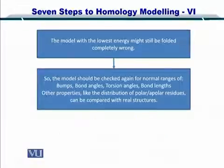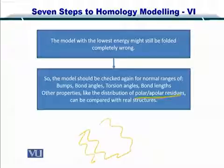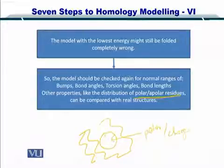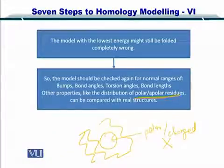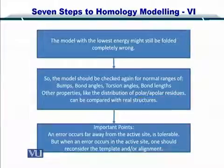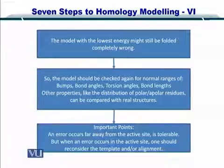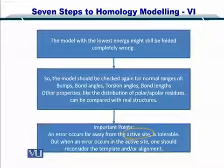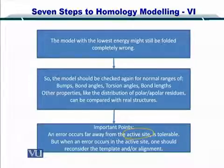Other properties such as the distribution of polar and nonpolar residues should also be normal. If you have a polar or charged residue inside the protein structure, your structure can have an unstable core and therefore may be an incorrect prediction. The important point to remember is that we can tolerate slight errors, but such errors should not be in the active sites of the protein. The active site is responsible for the function of that protein, so the hydrophobic core may have slight variations, but the active site must not have a lot of variation.